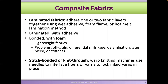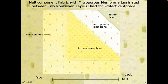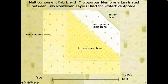Laminated fabrics connect one or two fabric layers together using some kind of adhesive, sometimes a hot melt method. You can also bond these structures with foam or by stitching using warp knitting machines to interlace fibers or yarns and lock them together. For example, this composite material has a non-woven layer on top, a non-woven layer on the bottom, and a microporous membrane in the middle — laminated between two non-woven layers and used for protective apparel like masks.